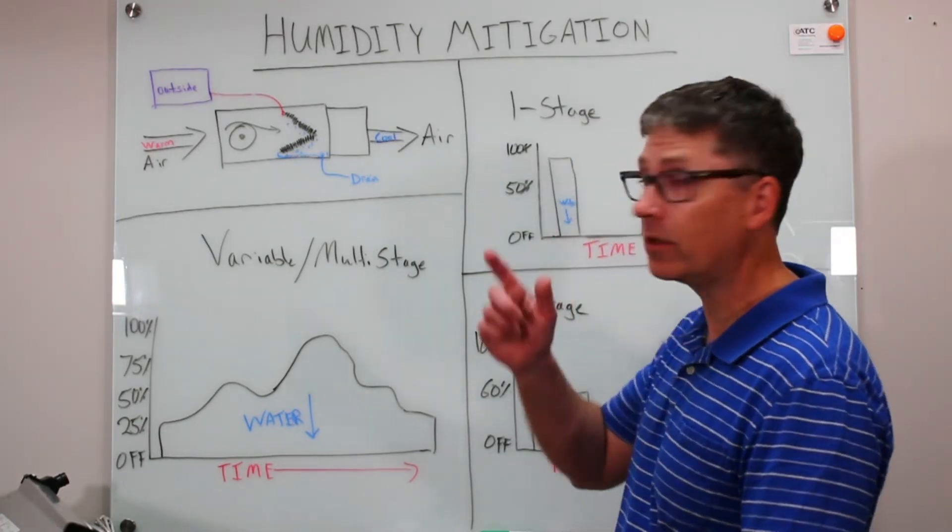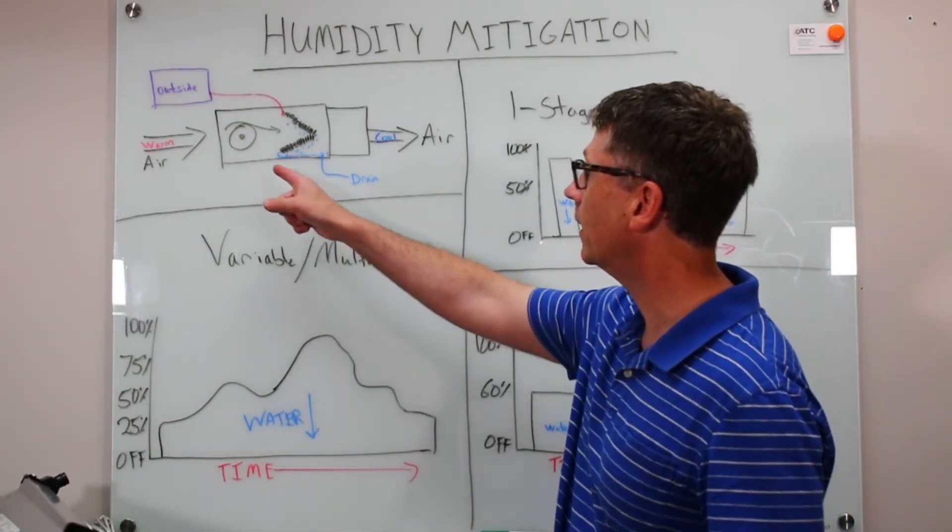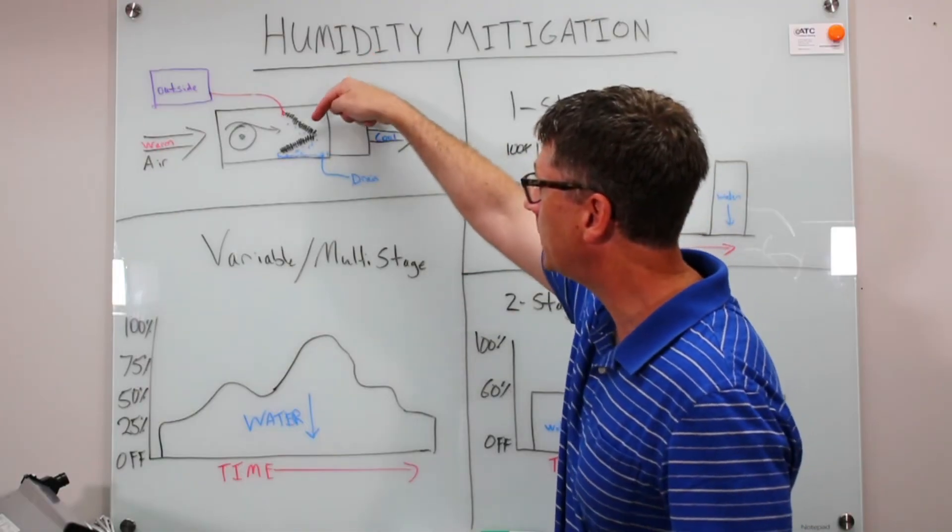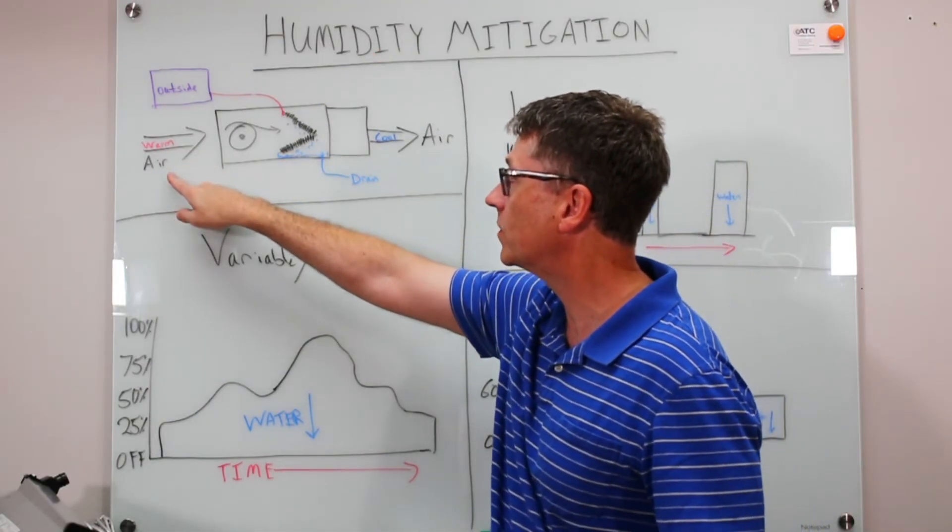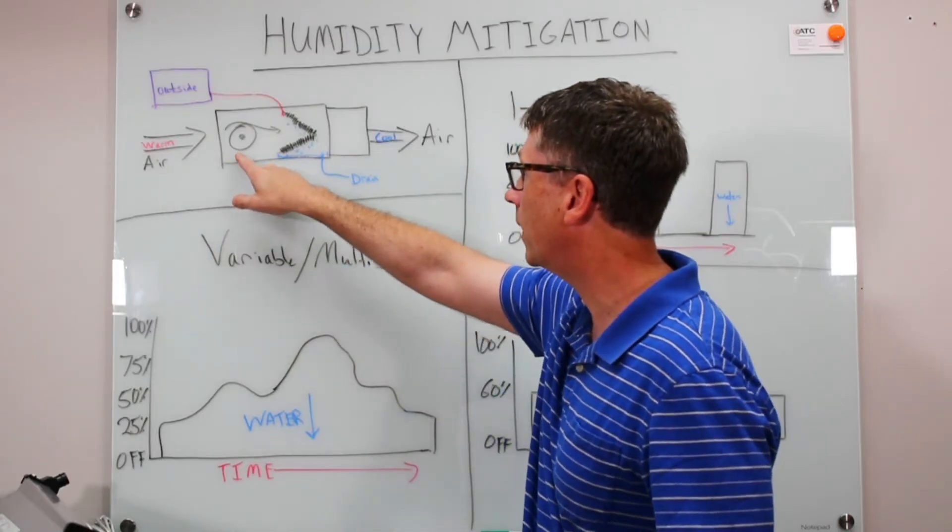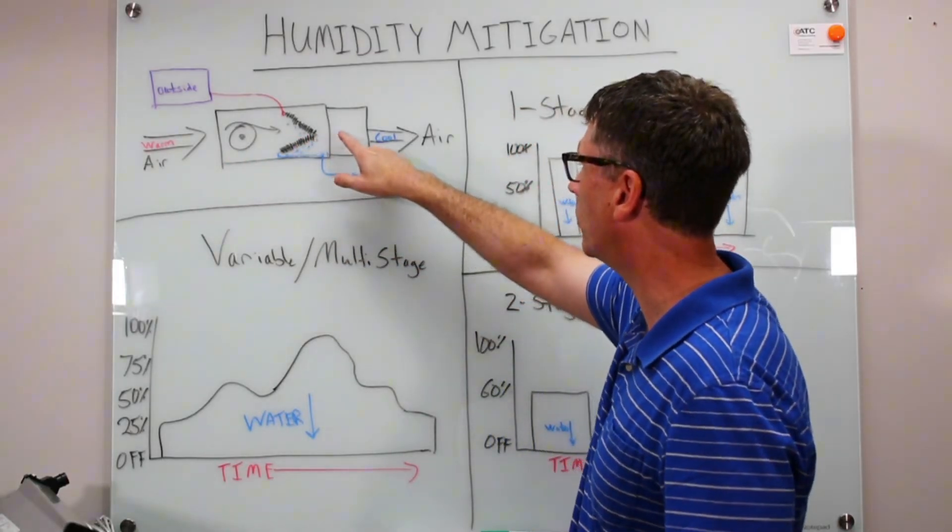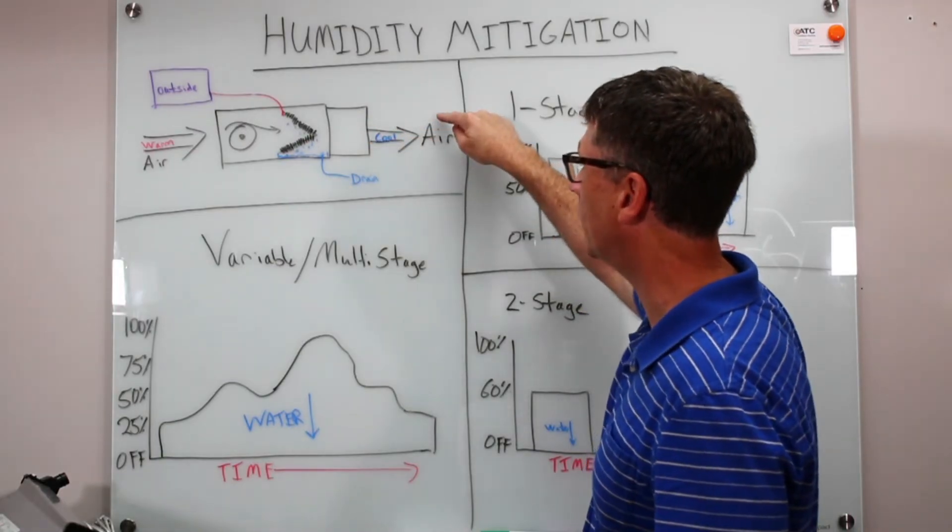So drawn out, here is what your AC system looks like. Inside your house there will be an air handler and this piece right here is the evaporator coil. Warm air from inside the house gets drawn in by the fan gets blown across that evaporator coil and out into the rest of your house.